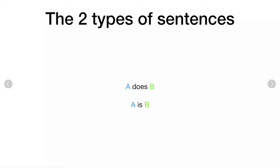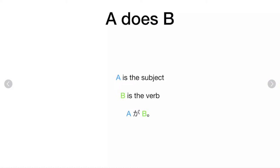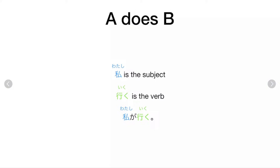Every Japanese sentence is one of two types: either A does B, or A is B. That is the only kind of Japanese sentence at its core level. A is the subject. If it is an A does B sentence, B is a verb, so A ga B. For example, watashi ga iku — I am going to go. Watashi is the subject, and iku is the verb meaning 'to go.'